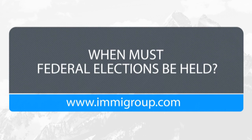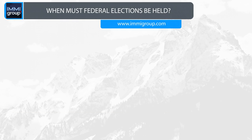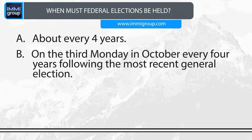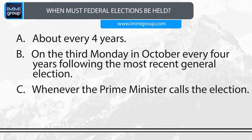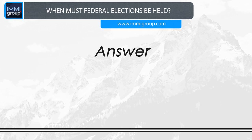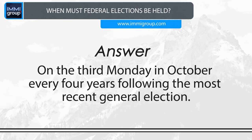When must federal elections be held? A. About every four years. B. On the third Monday in October, every four years following the most recent general election. C. Whenever the Prime Minister calls the election. D. When the MPs want a new Prime Minister. Answer: On the third Monday in October, every four years following the most recent general election.